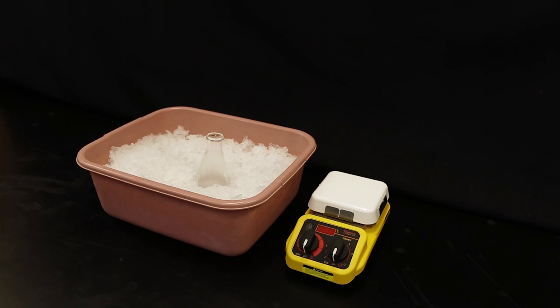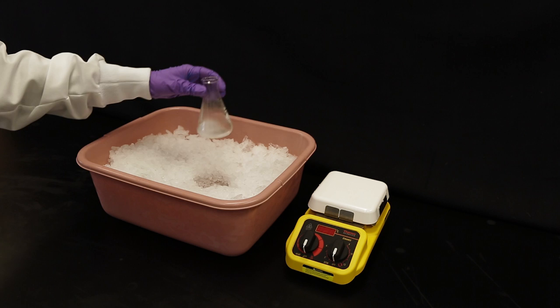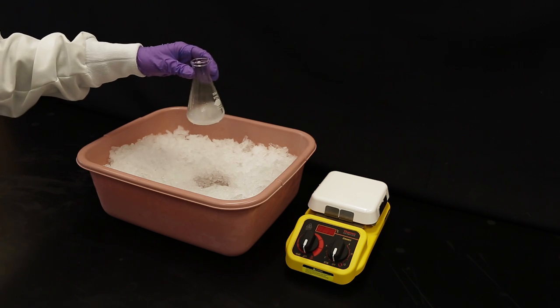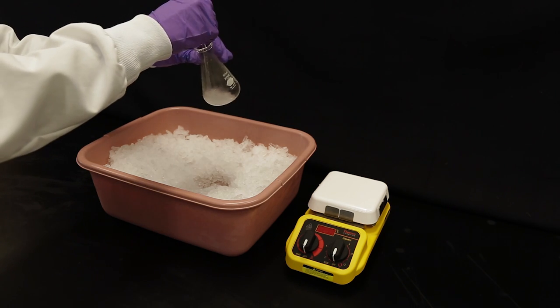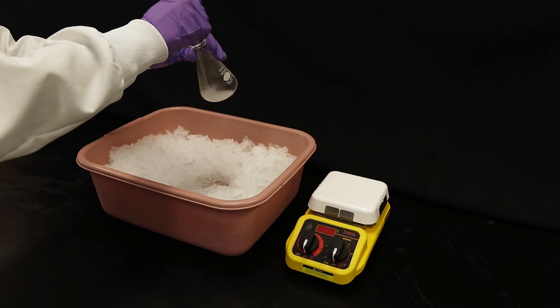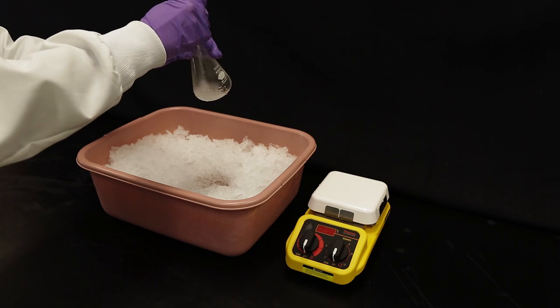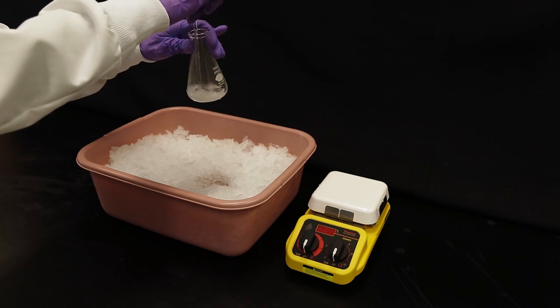Crystals need a surface to grow from. Glass often prevents this due to its smooth surface. To generate pure crystals, you must seed the supersaturated solution. There are two methods for seeding: adding a pure crystal of the desired compound with a spatula, or scratching the bottom of the glass vessel with a glass stir rod.